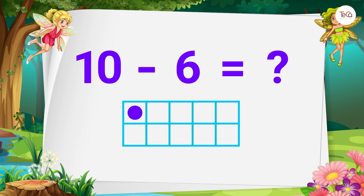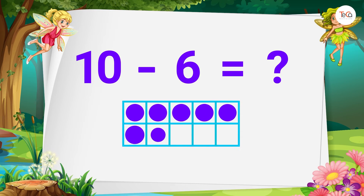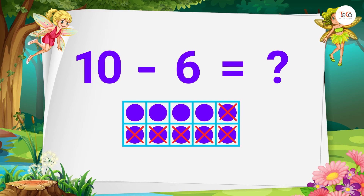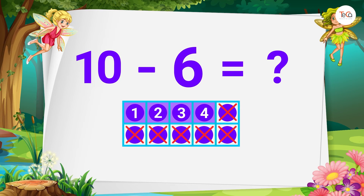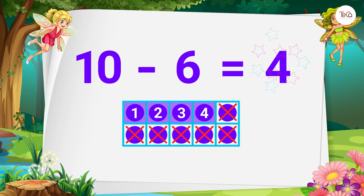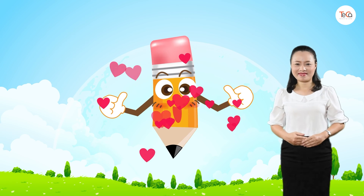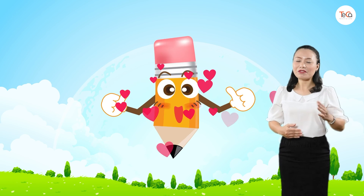Draw ten dots, then cross out six dots. We have four dots left, so ten minus six equals four.